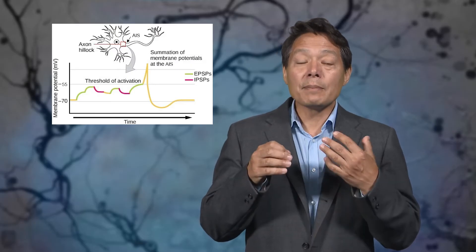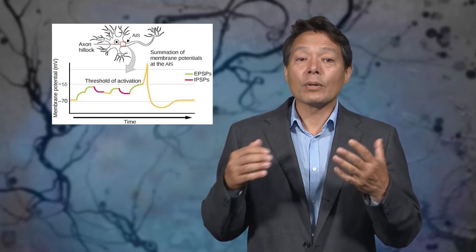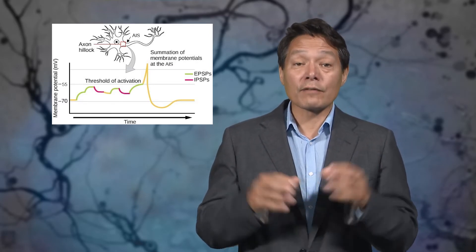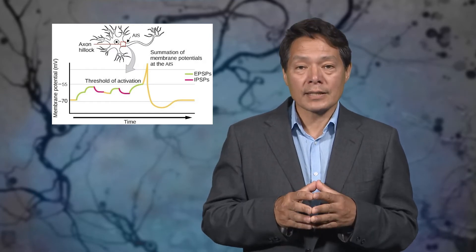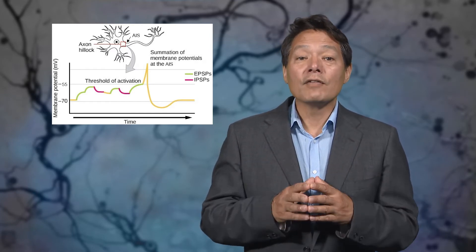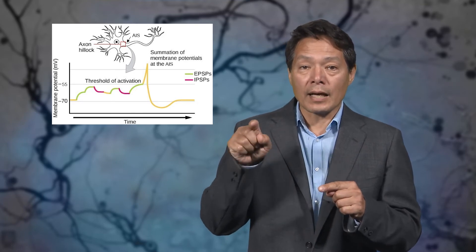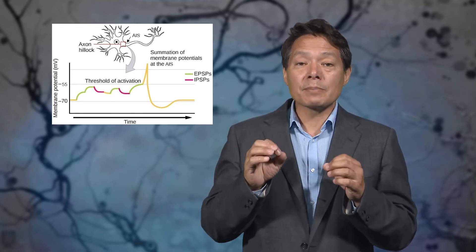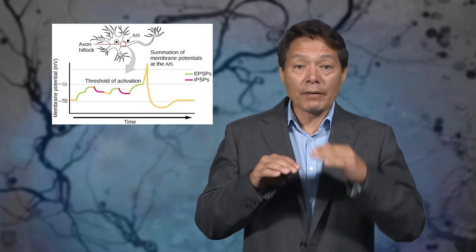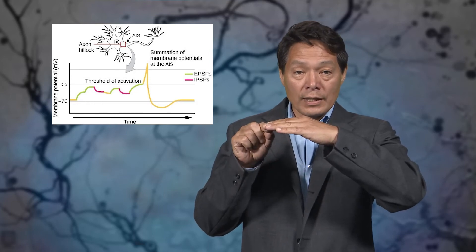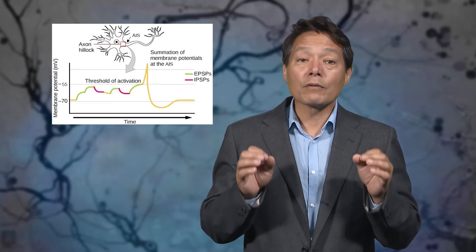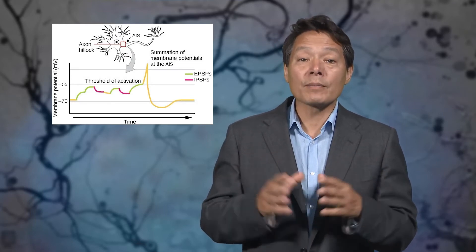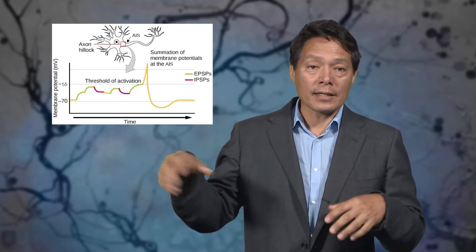Once that happens, it's as if the EPSP never happened. So another way to think of a neuron is to say that it forgets that it was ever excited once it has returned to its resting potential. Now if EPSPs do successfully add up, and if the sum of EPSPs pushes the potential above the so-called firing threshold for the neuron, typically around minus 55 millivolts, then the neuron will fire an action potential away from the axon hillock down the axon.